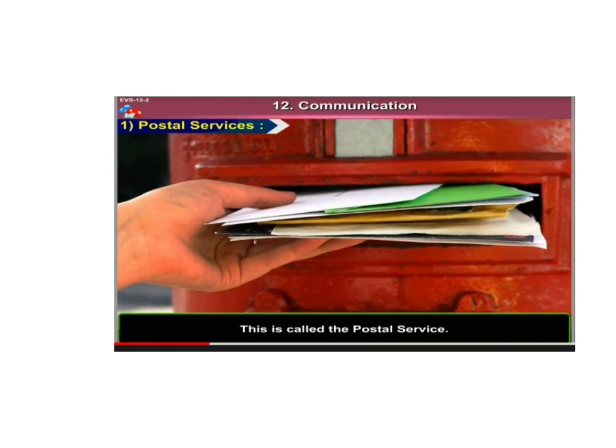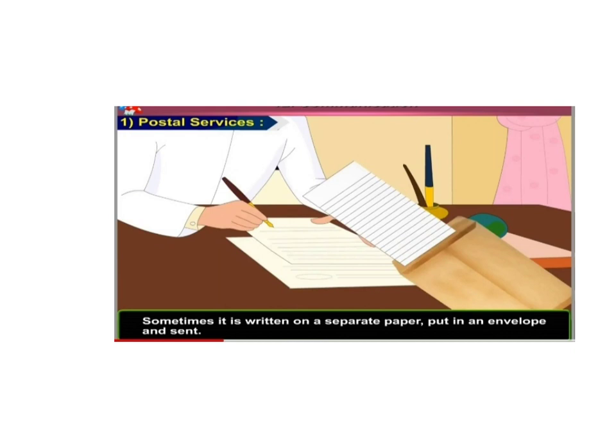The first source is postal services. Postal services are those services where we write a letter to whom we have to send, then we post that letter into a letter box. The postmaster comes, collects the letters from the post box, and through this postal service the letters are received by the persons we have sent them to. We write letters to our relatives, friends, colleagues, and different people at different places.